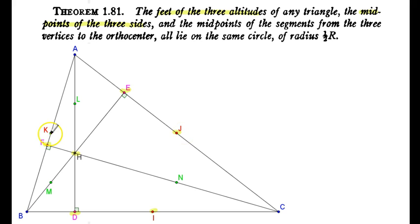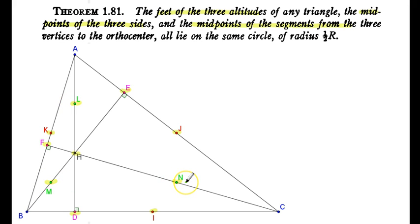Moving on: the midpoints of the three sides. I is the midpoint of BC, J is the midpoint of AC, and K is the midpoint of AB. And finally, the midpoints of the segments from the three vertices to the orthocenter.